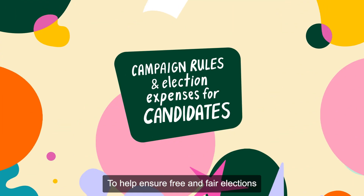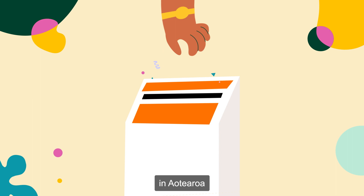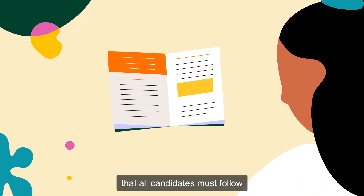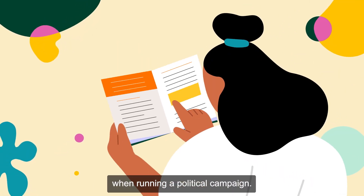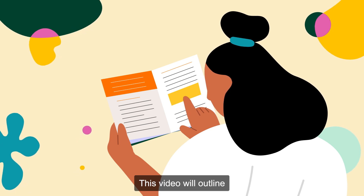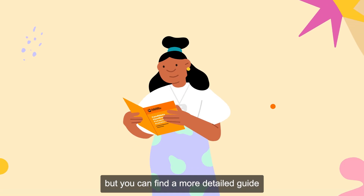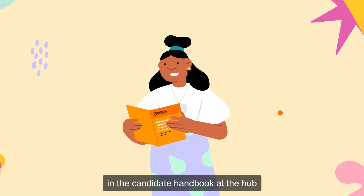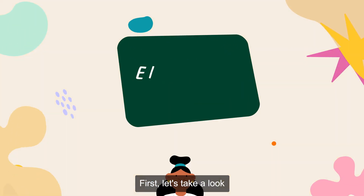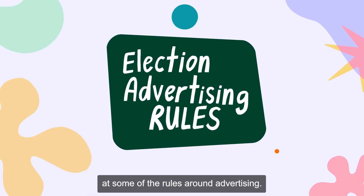To help ensure free and fair elections in Aotearoa, we have campaign and expenditure rules that all candidates must follow when running a political campaign. This video will outline many of the rules, but you can find a more detailed guide in the Candidate Handbook at the Hub at elections.nz. First, let's take a look at some of the rules around advertising.